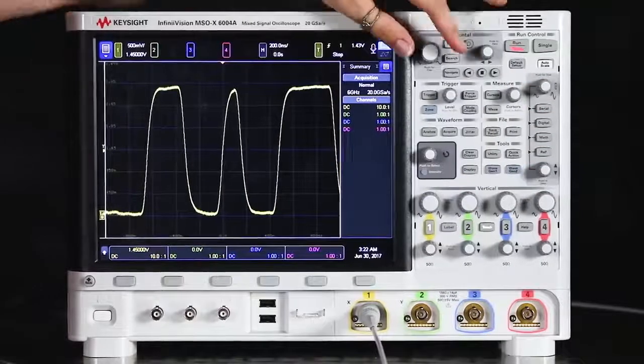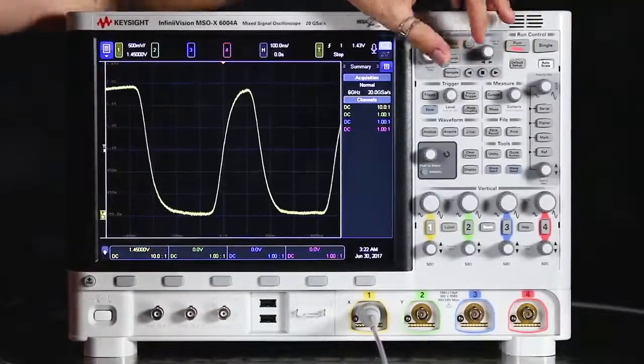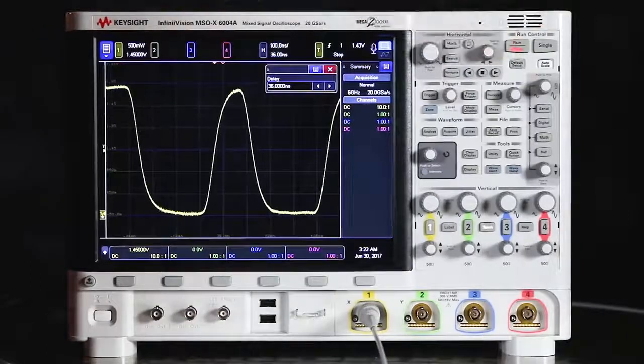I want to stop the acquisition. Then I want to zoom out and find one of the smallest pulses I can see in this signal and center that on screen.